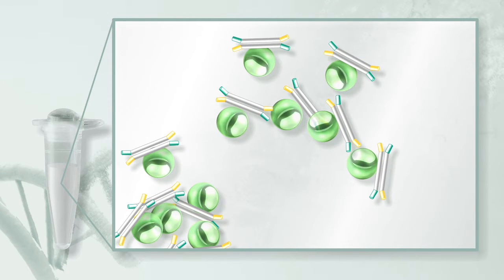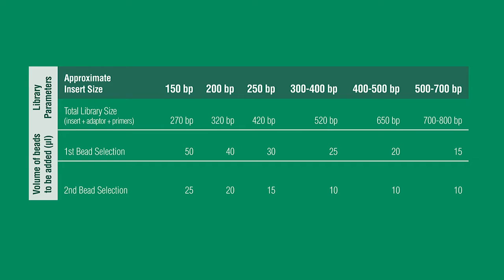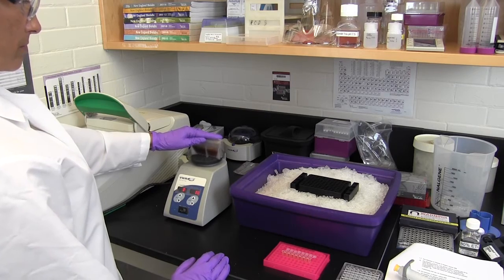This is accomplished using specific ratios of the bead solution to total volume and the volume of beads required varies depending on the desired fragment size. Magnetic beads should be used at room temperature and they should be vortexed before use.